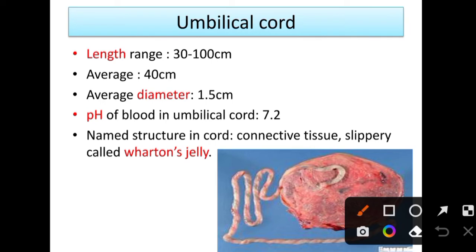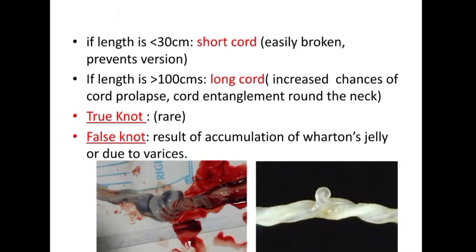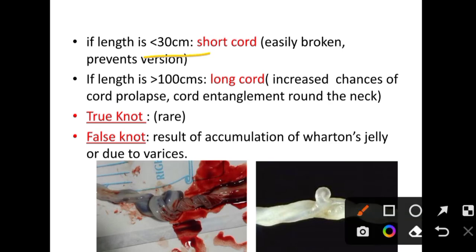Next is the umbilical cord examination. The usual length is 30 to 200 cm, with an average of 40 cm. Average diameter is 1.5 cm, and the pH of blood in the umbilical cord is 7.2. There is connective tissue called Wharton's jelly. If length is less than 30 cm, it is called a short cord — it may easily break or prevent version.